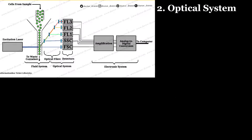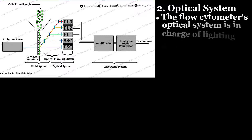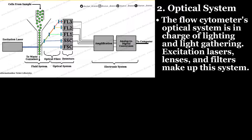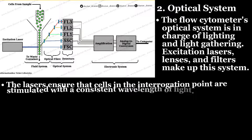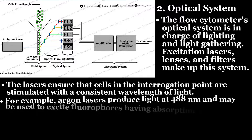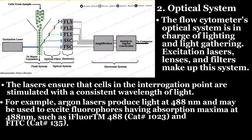Number two, the optical system. The flow cytometer's optical system is in charge of lighting and light gathering. Excitation lasers and filters make up this system. The lasers ensure that cells in the interrogation point are stimulated with a consistent wavelength of light. For example, argon lasers produce light at 488 nanometers and may be used to excite fluorophores having absorption maxima at 488 nm, such as iFluor™ 488 (cat number 1023) and FITC (cat number 135).